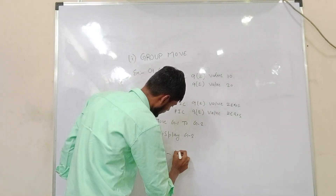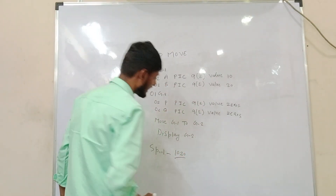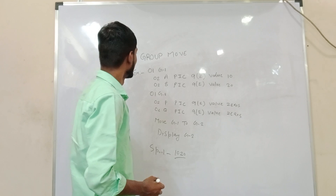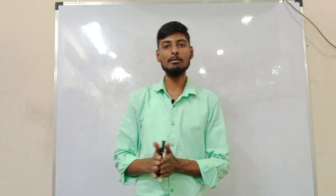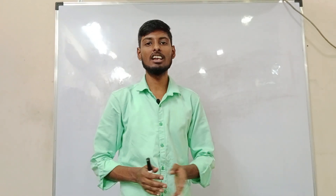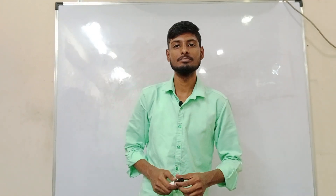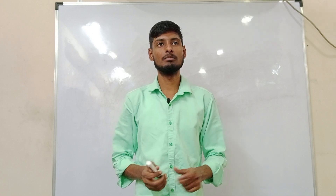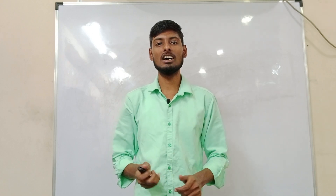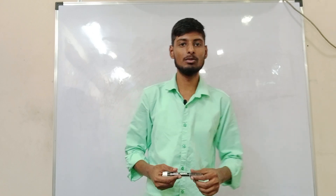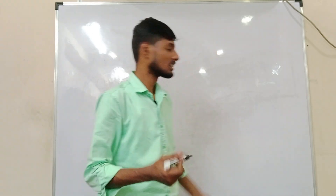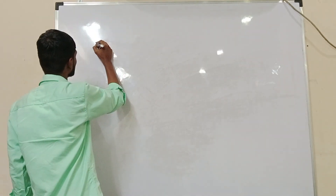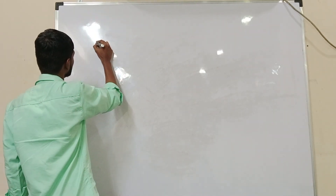We will get values like 10, 20 in the spool area. Corresponding MOVE allows us to copy a particular block of characters to another variable. We will check this in our example.